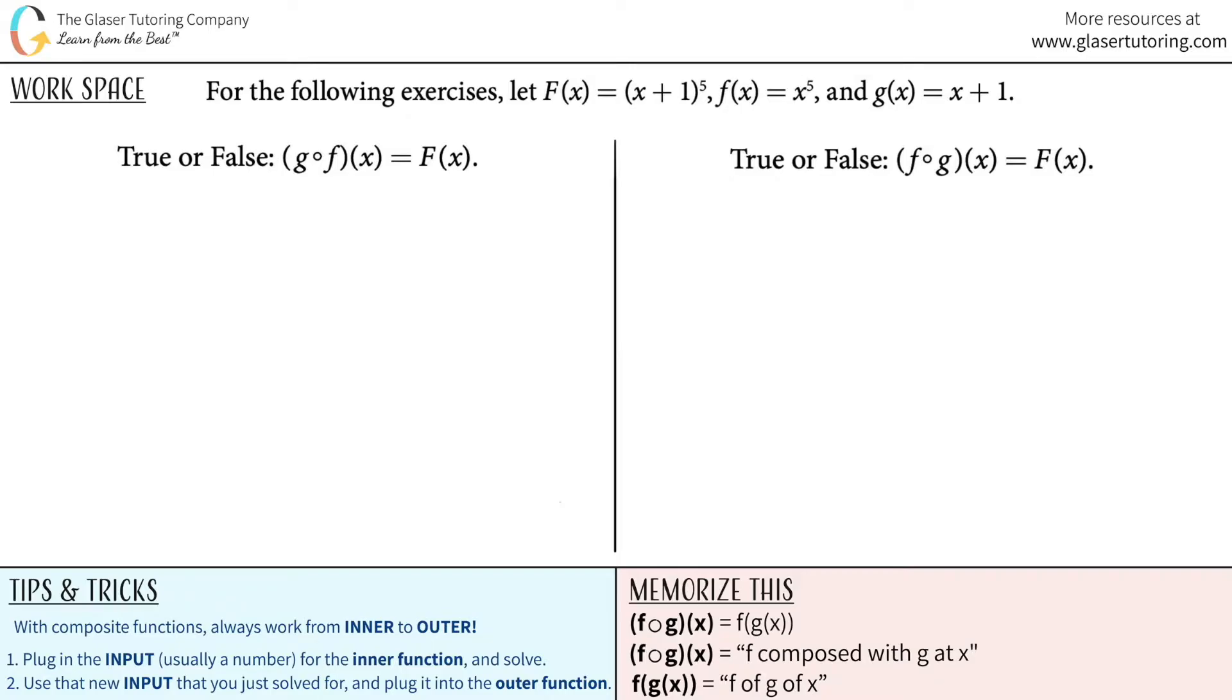For the following exercises, let capital F of X equals X plus 1 to the 5th, F of X equals X to the 5th, and G of X equals X plus 1.